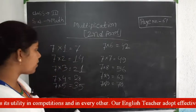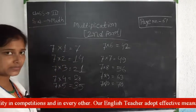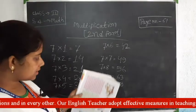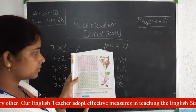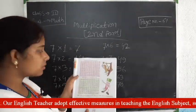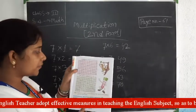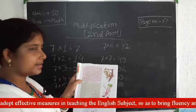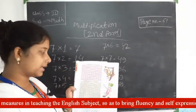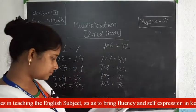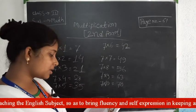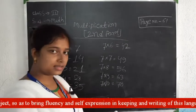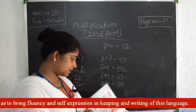This is the table of 7. You can also see the tables of 8, 9, and 10 written in your textbook. You have to practice the tables properly.